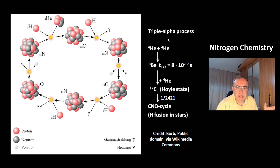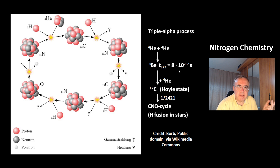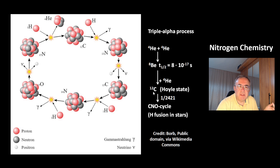In this chain of reactions, there are two bottleneck situations. One is called the beryllium barrier — the fact that this isotope has just a half-life of 8×10⁻¹⁷ seconds, so most of those isotopes just decay back. The second bottleneck is the Hoyle state carbon: again, most of the carbon-12 isotopes in the Hoyle state decay back to helium-4. Only one in 2421 makes it to carbon-12 in the ground state. Then you get the CNO cycle.